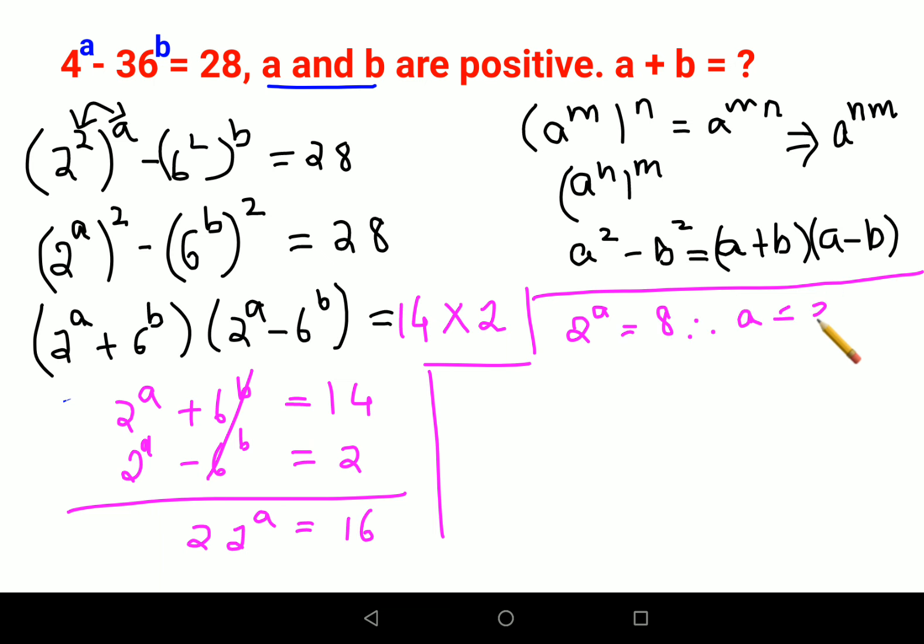Now putting this value of a as 3, we'll have 2 raised to 3 that is 8 plus 6 raised to b equals to 14. Subtracting both sides by 8, I will get 6 raised to b equals to 6, therefore b value is just 1.